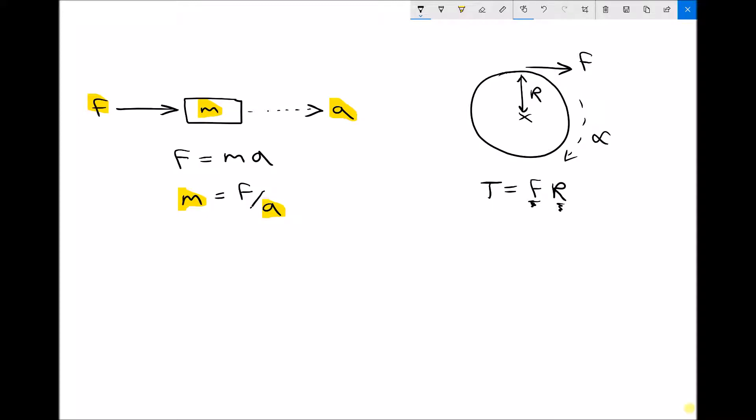So in our angular equivalent of Newton's second law, torque takes the place of force. And in the place of mass, we have something called moment of inertia, times angular acceleration, alpha. So Newton's second law for angular motion is T equals I alpha.